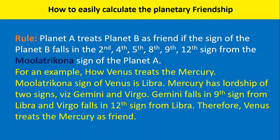I am reading the rule again. Planet A treats Planet B as friend if the sign of Planet B falls in the 2nd, 4th, 5th, 8th, 9th, or 12th sign from the Mulatrikona sign of Planet A. If it does not fall in these signs, then Planet A treats Planet B as enemy. If one sign falls and one sign does not fall, then Planet A treats Planet B as neutral.